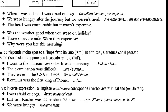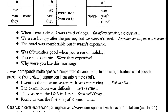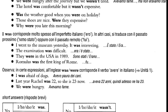Then: 'was the weather good when you were on holiday?' — the subject is 'the weather', which corresponds to the pronoun 'it', so 'was it / was the weather good, when you were on holiday'. Then: 'those shoes are nice — were they expensive?' And 'why were you late this morning?' — in this case we have 'why' before the verb, because when you have an interrogative pronoun, it goes before the verb: 'why were you late this morning?' Also note that 'I was' corresponds in Italian most often to 'ero', in other cases to 'sono stato' or 'fui'.